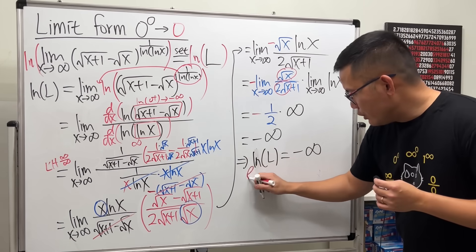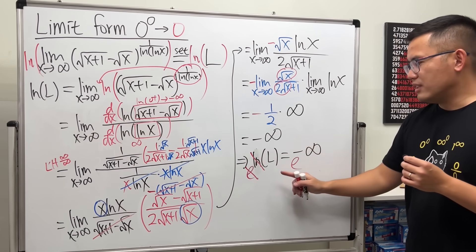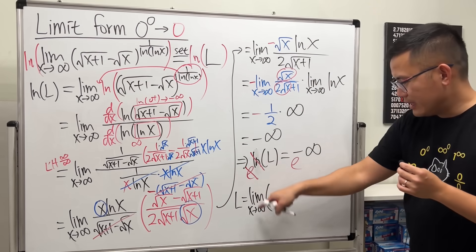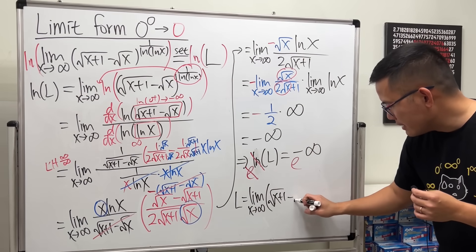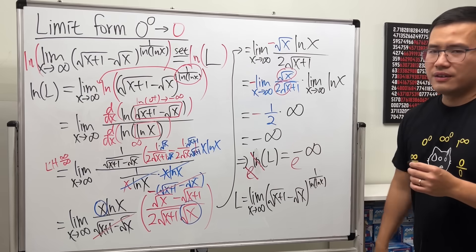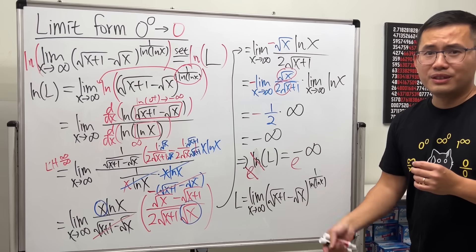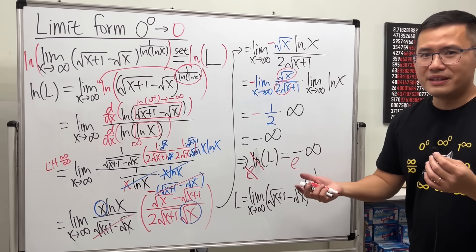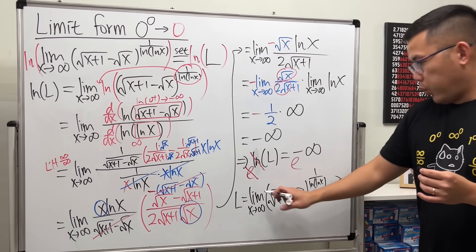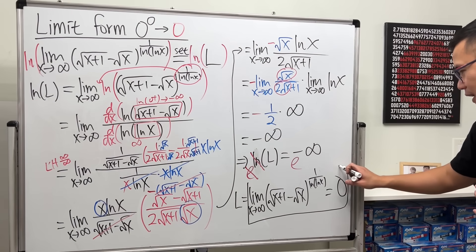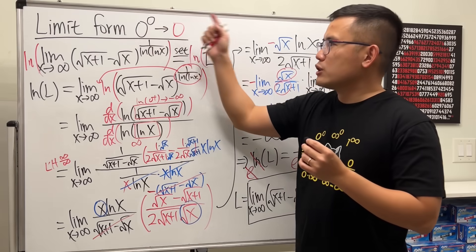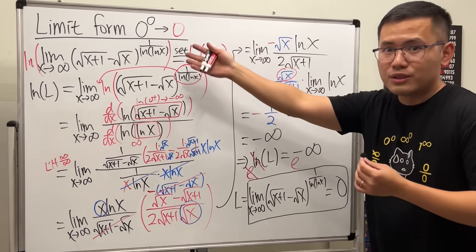What we are saying is that ln of L equals negative infinity. I don't want the ln here — so do e to that power on both sides, and e to the ln of L cancels out. Ladies and gentlemen, we end up with L, which is the limit. The limit as x approaching infinity of square root of x plus 1 minus square root of x, raised to 1 over ln of ln of x. What's e to the negative infinity? It's 1 over e to the infinity. e to the infinity is infinity, so this is 1 over infinity, which is 0. This right here is equal to 0. Finally, after many years, I finally came up with an example that 0 to 0's power is approaching 0.